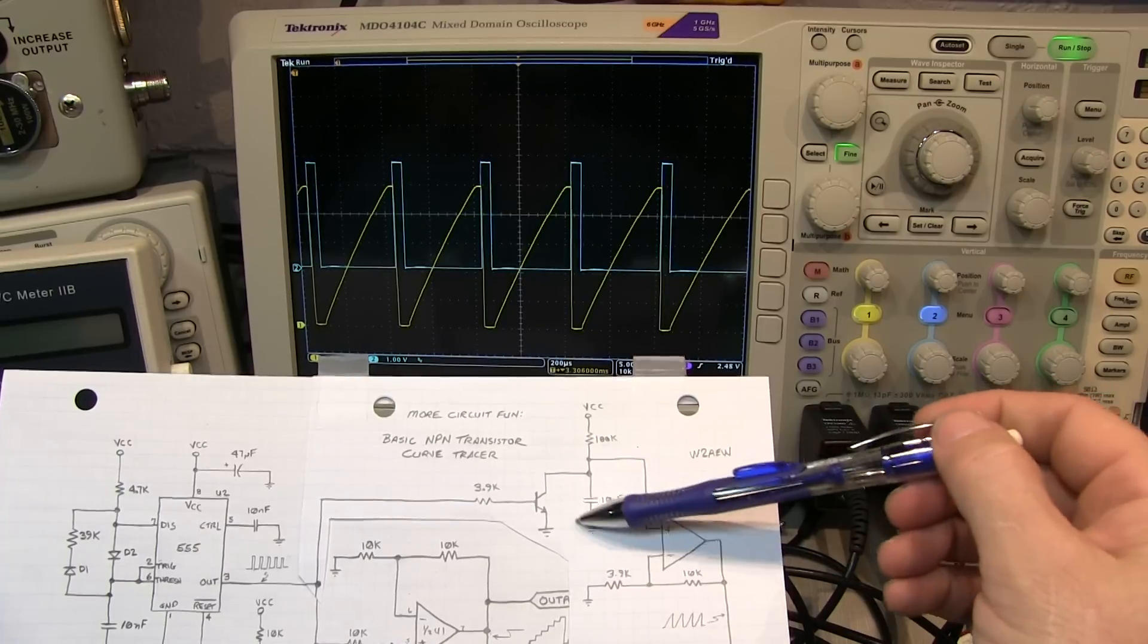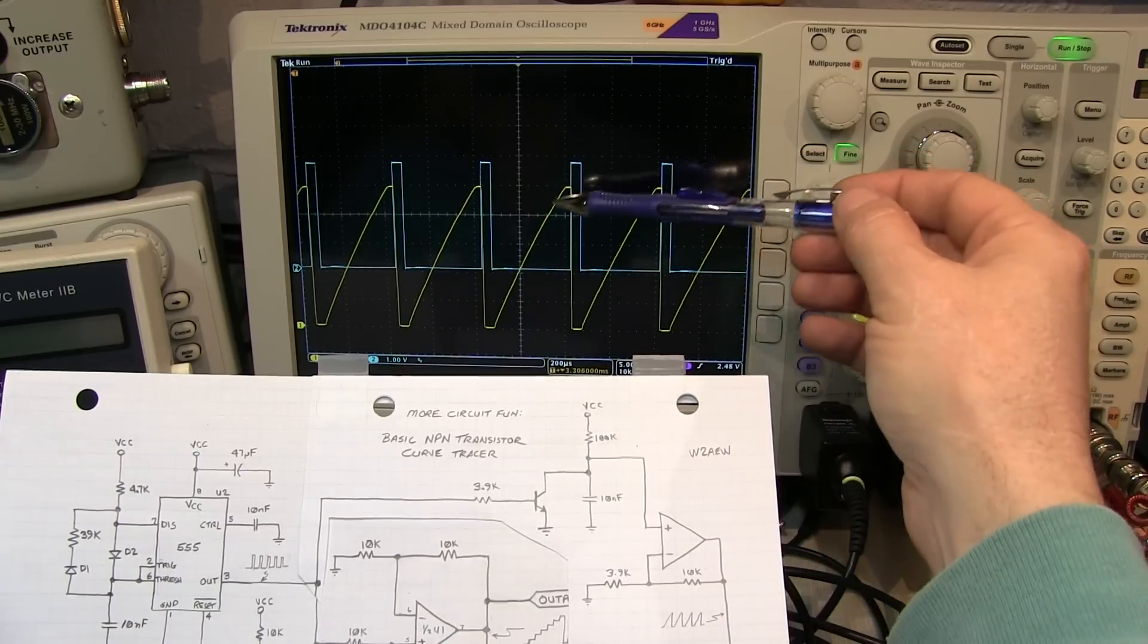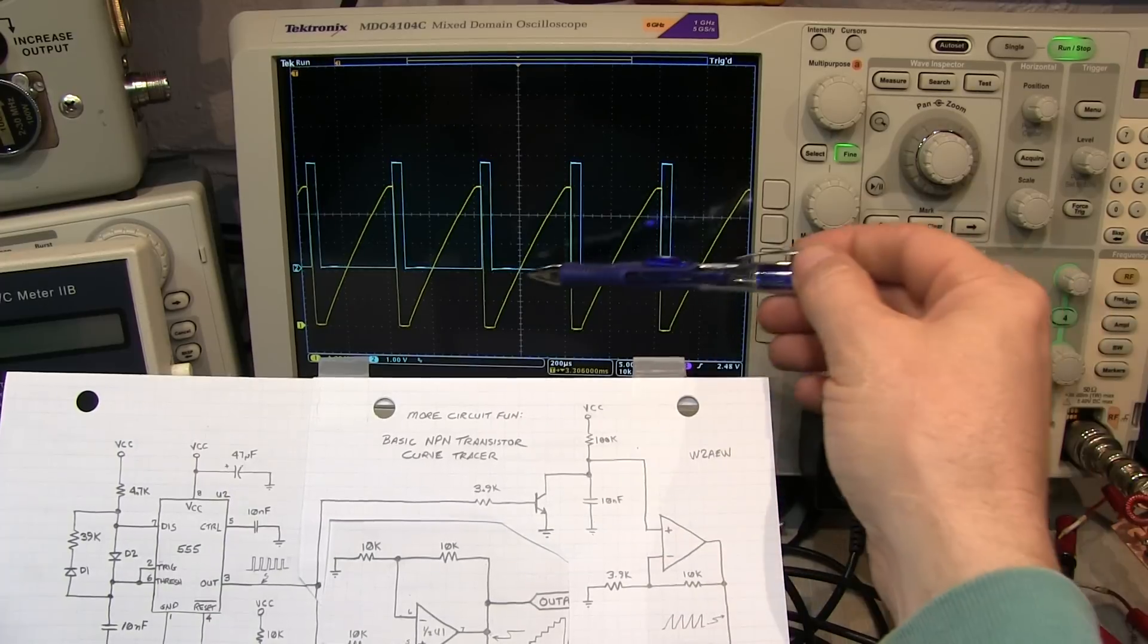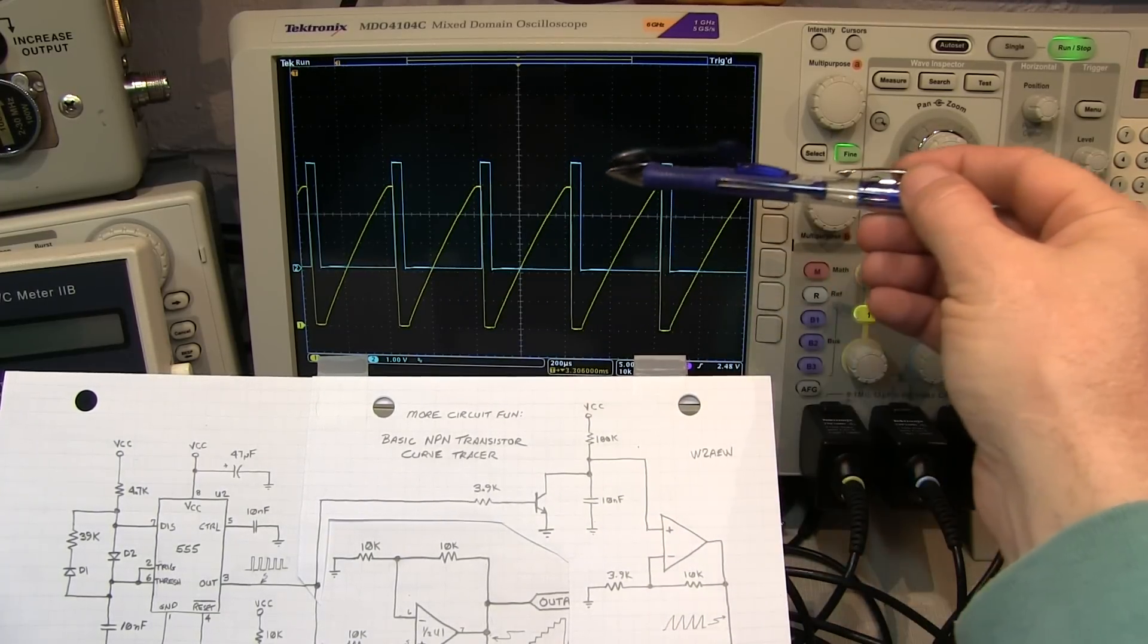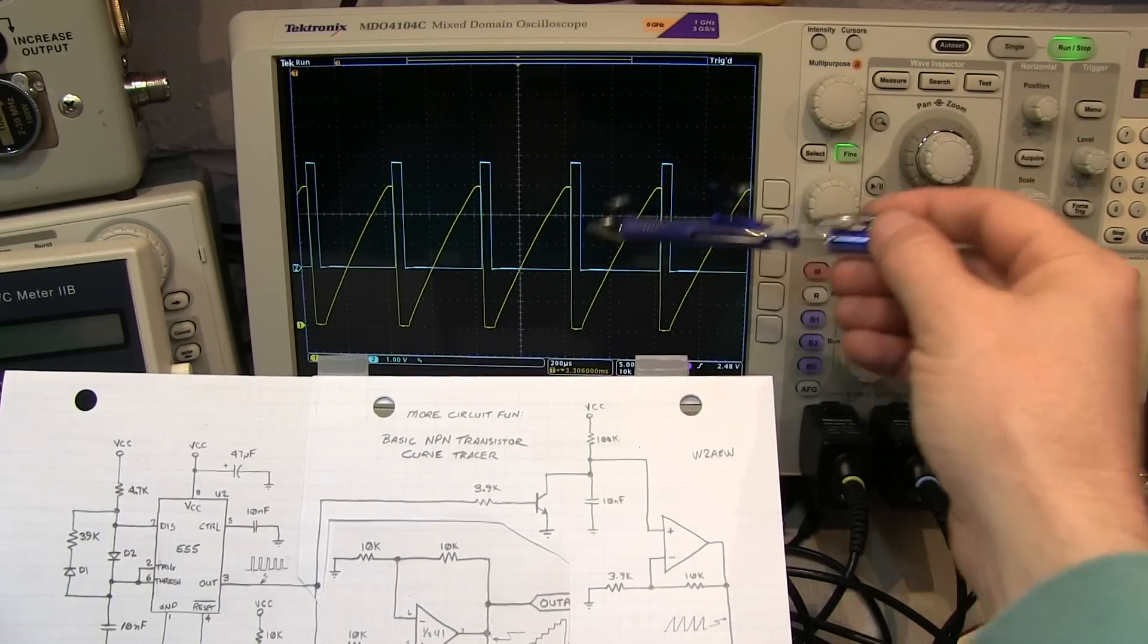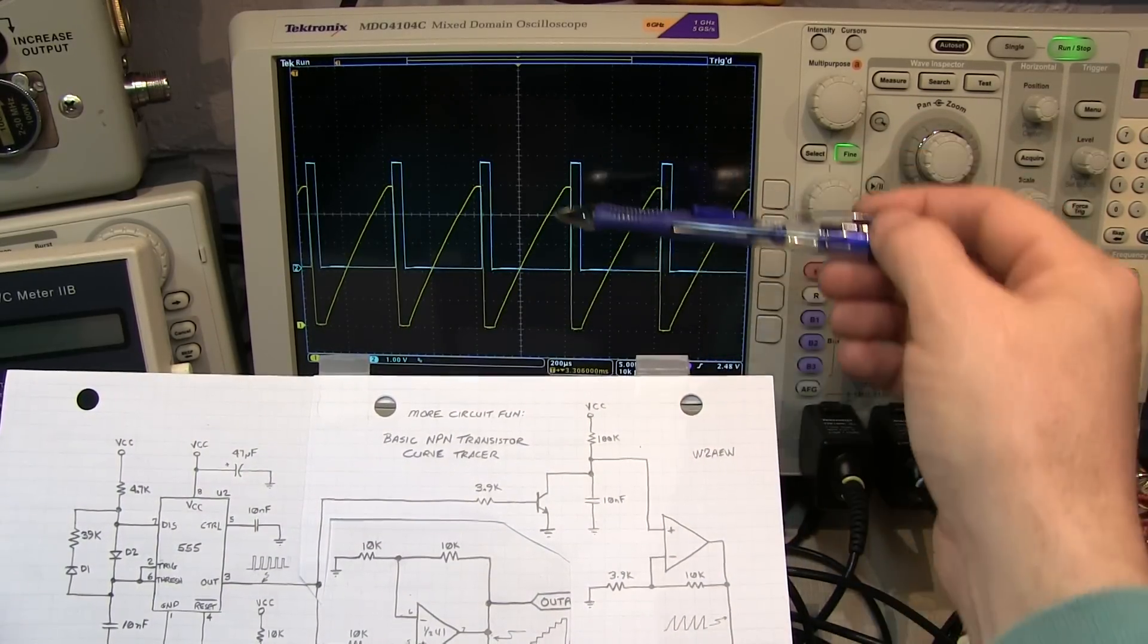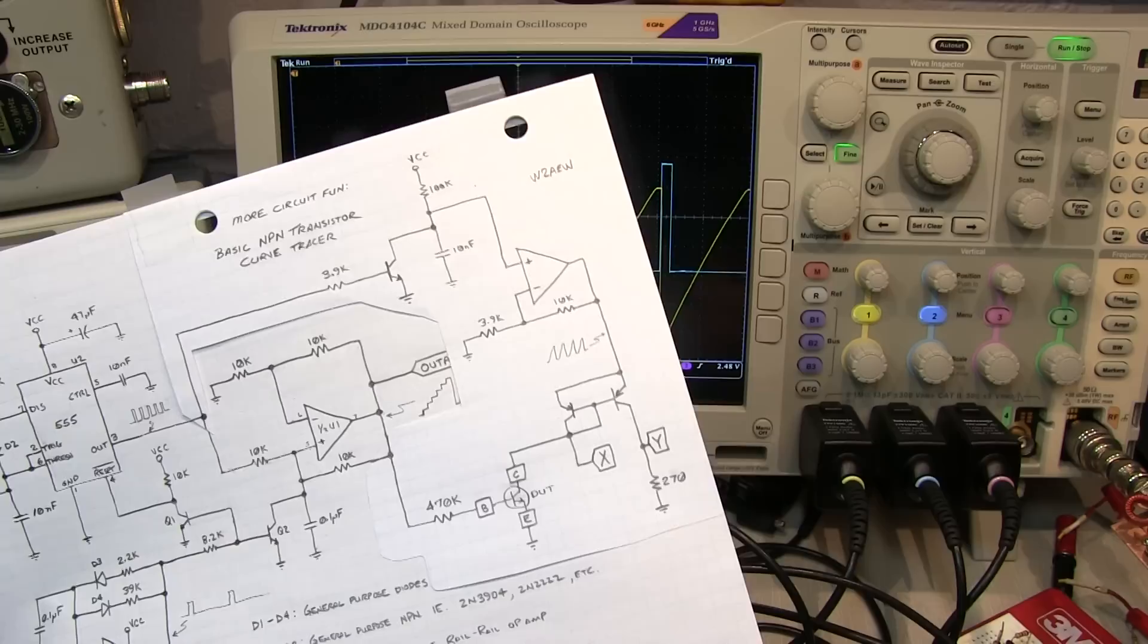This capacitor is now allowed to charge up. It doesn't get fully charged all the way to VCC before the next pulse comes along. Because we're kind of cutting that charge cycle off early, we get something somewhat linear in terms of that charge. This would continue up in an exponential fashion ultimately, but we're just terminating that before it finishes. This gives us our VCE ramp that we're applying to the collector of our test transistor.